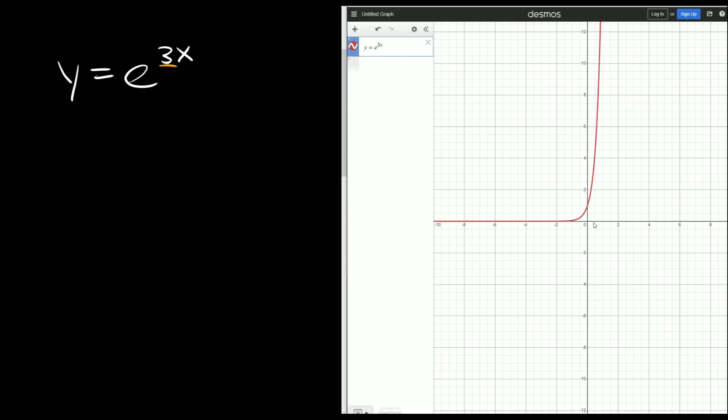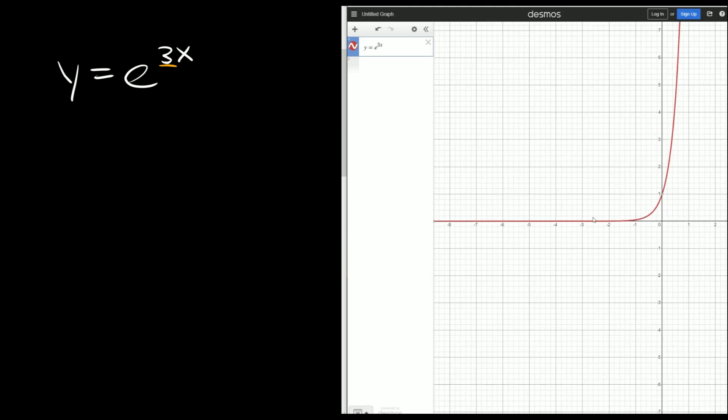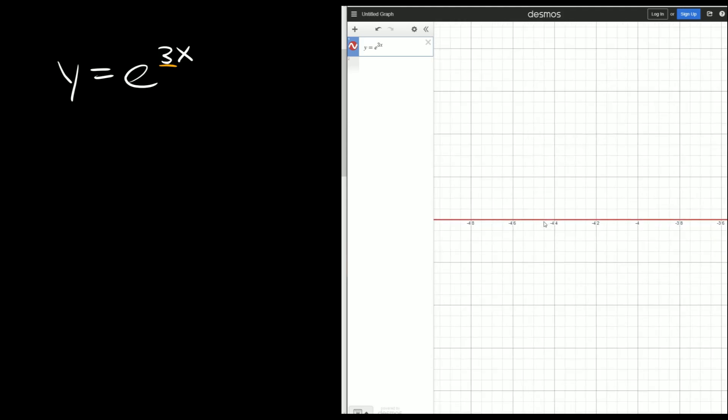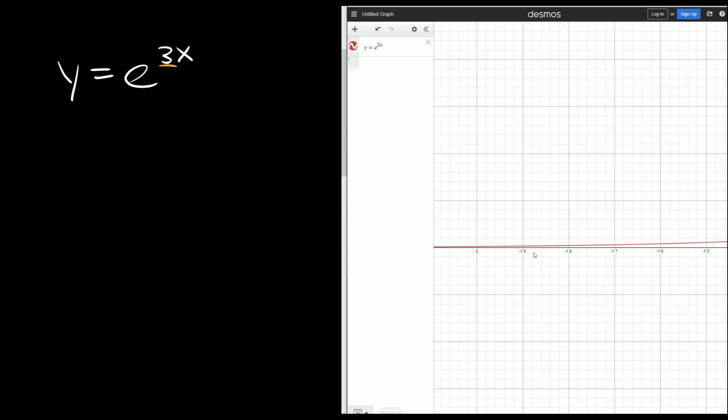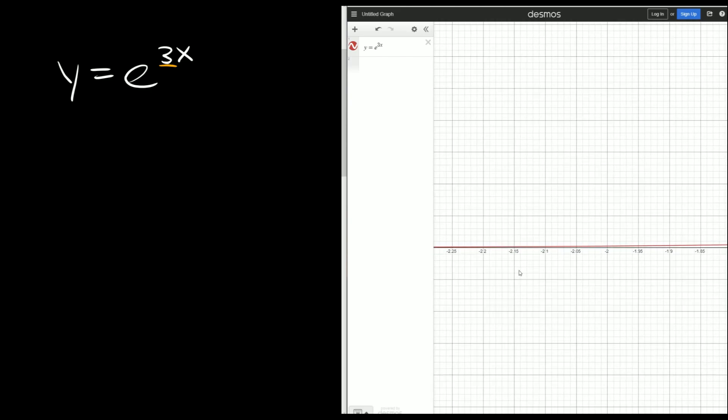And I have it graphed on this Desmos graphing calculator right here, and you can see I already plugged in the function y equals e raised to the 3x, and it shows exponential growth. The other thing I wanted to point out is we always have an asymptote along the x-axis. None of these graphs are ever going to touch the x-axis. It'll get really close. It looks like it's touching here, but the more we zoom in, you'll see it just gets closer and closer but never actually touching.